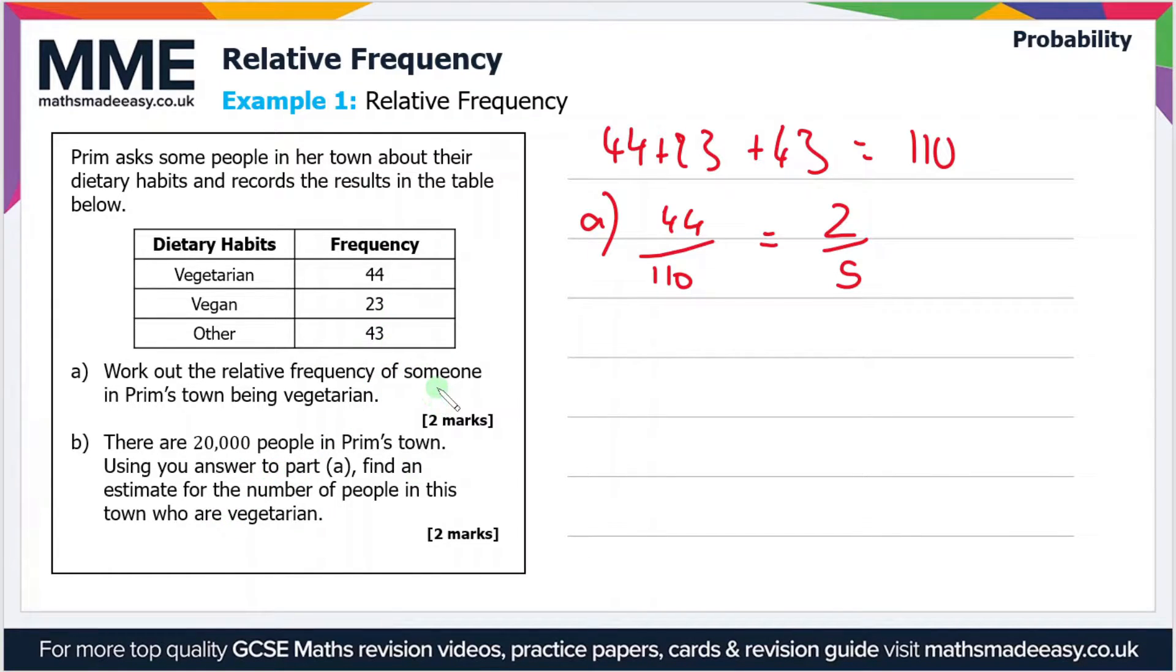Then part b says there are 20,000 people in Prim's town. Using your answer to part a, find an estimate for the number of people in this town who are vegetarian. Well, if there's 20,000 people in the town and the probability that someone is vegetarian is two-fifths, then all we do is times 20,000 by two-fifths, and that gives us 8,000. So there are approximately 8,000 people in the town that are vegetarian.